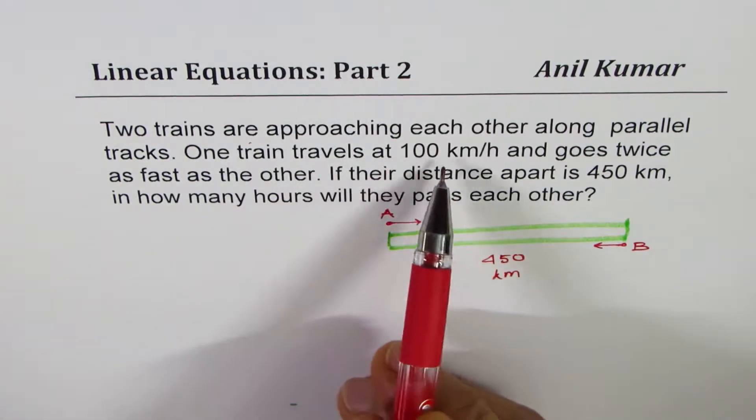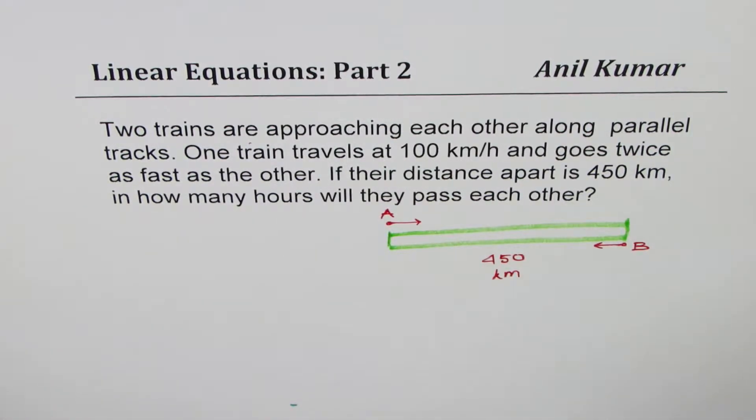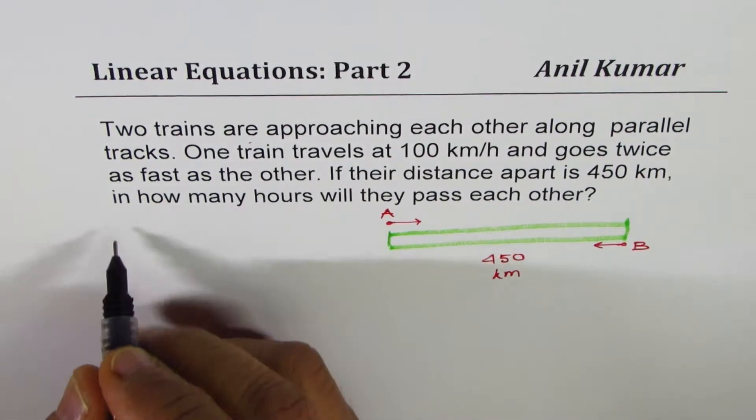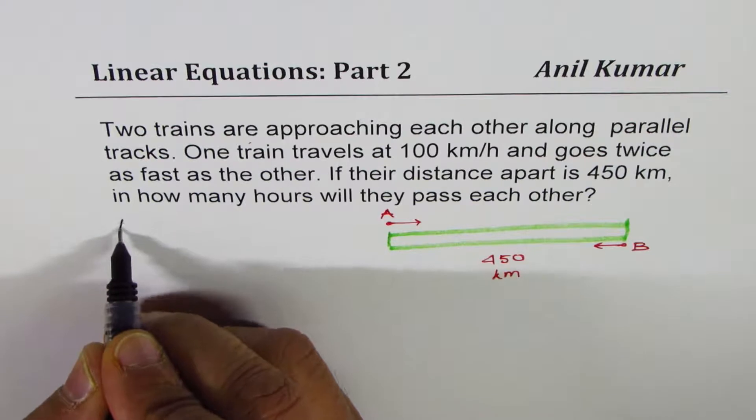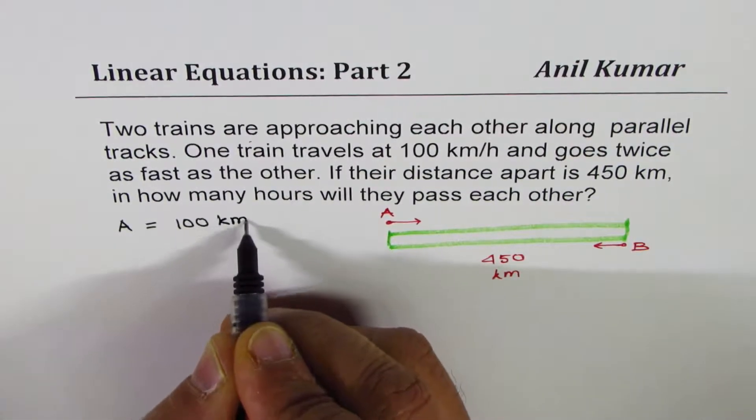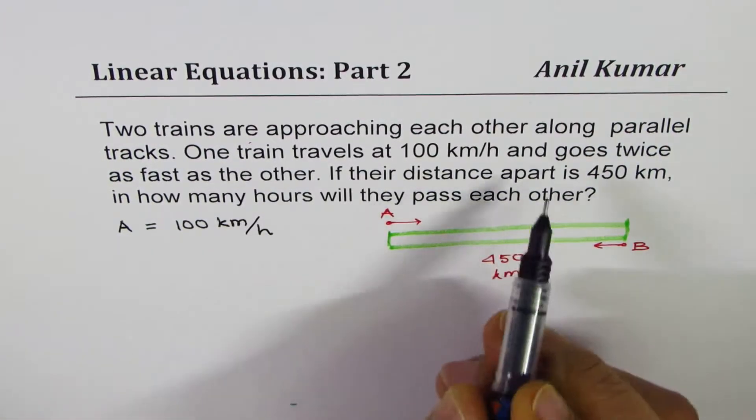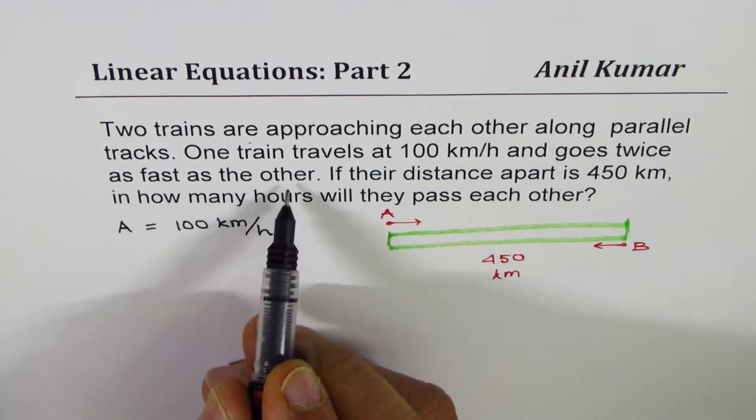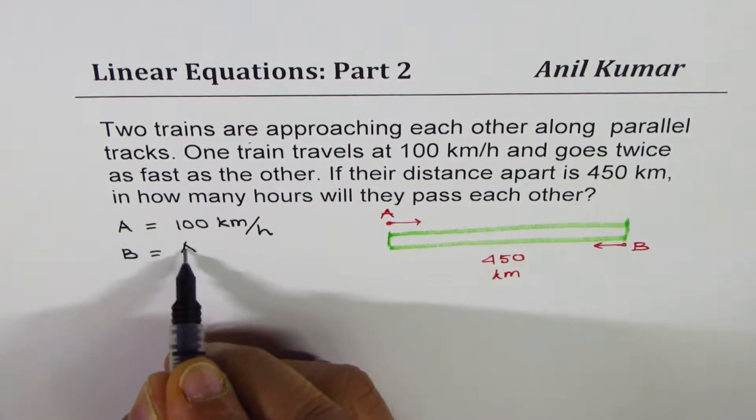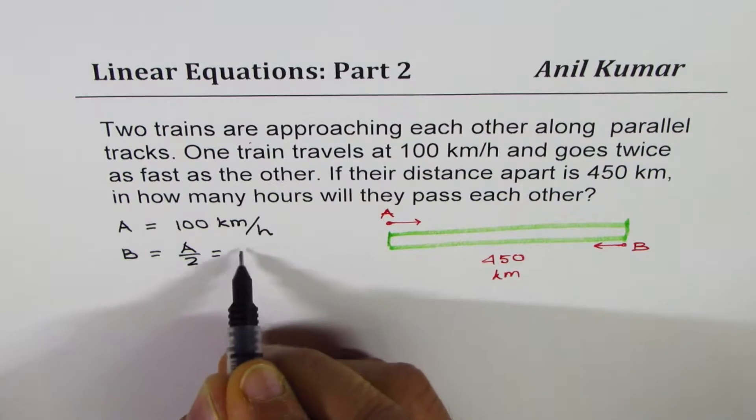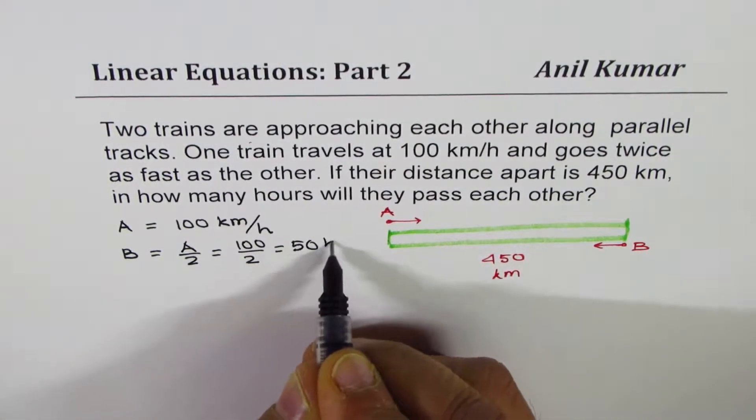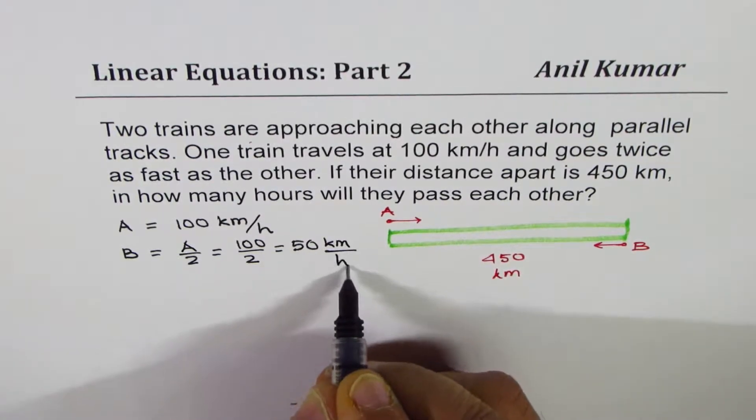Two trains are approaching each other along parallel tracks. One train travels at 100 km per hour and goes twice as fast as the other. So speed of A is 100 km per hour. It goes twice as fast as B, that means speed of B is half of A. A divided by 2 which is 100 divided by 2 is 50 km per hour.